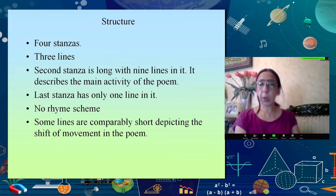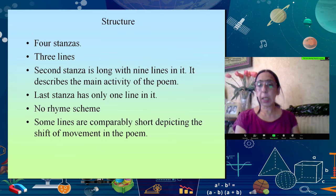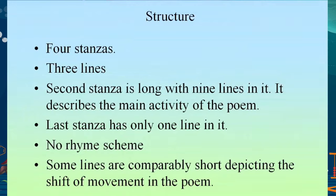There are four stanzas. The first has three lines and tells you the setting. The second is the longest with nine lines, describing the activity — quivering, twittering, chirping of the bird. Then there are three lines, and the last stanza has only one line. There is no rhyme scheme; when there is no rhyme scheme, it is called free verse. Some lines are very short, depicting movement, making the poem move very swiftly.